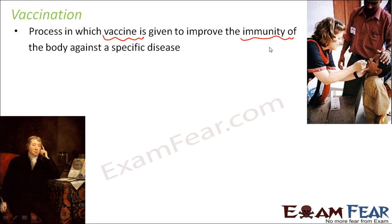In the process of vaccination, a vaccine is introduced inside the body. The purpose of this vaccine is to improve the immunity of the body against a specific disease. For example, if polio drops are given to kids, the immunity of the body against polio disease is being developed, so that if the microbe which causes polio attacks that person, the body will be able to fight against it and the person will not get polio — because the body has developed strong immunity against polio.